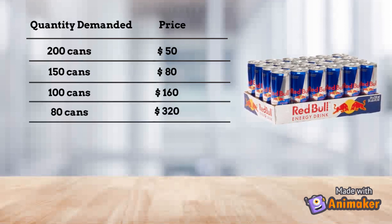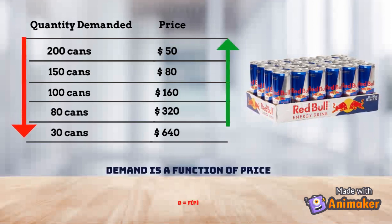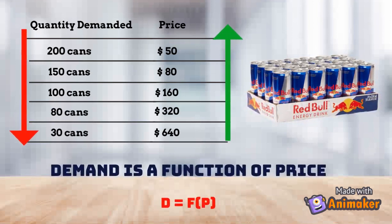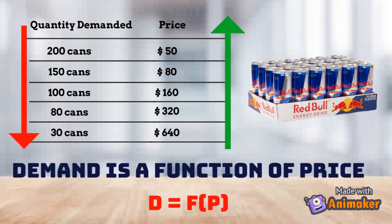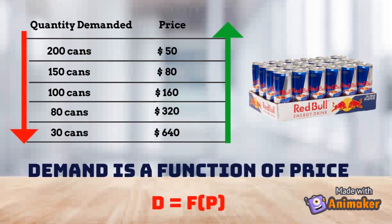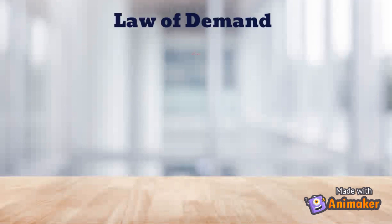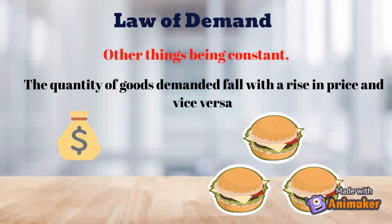As the price rises even further, the number of cans I can afford to buy decreases significantly, as shown in this table. As you can see, demand is heavily dependent on price. Thus, the law of demand states: other things remaining constant, the quantity of goods demanded falls with the rise in price, and vice versa.